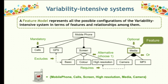This is an example of a final configuration of a mobile phone system: core support, high resolution screen, and media with camera. Feature models are really important in my research context because they help model variability and can be automatically analyzed to extract important information.